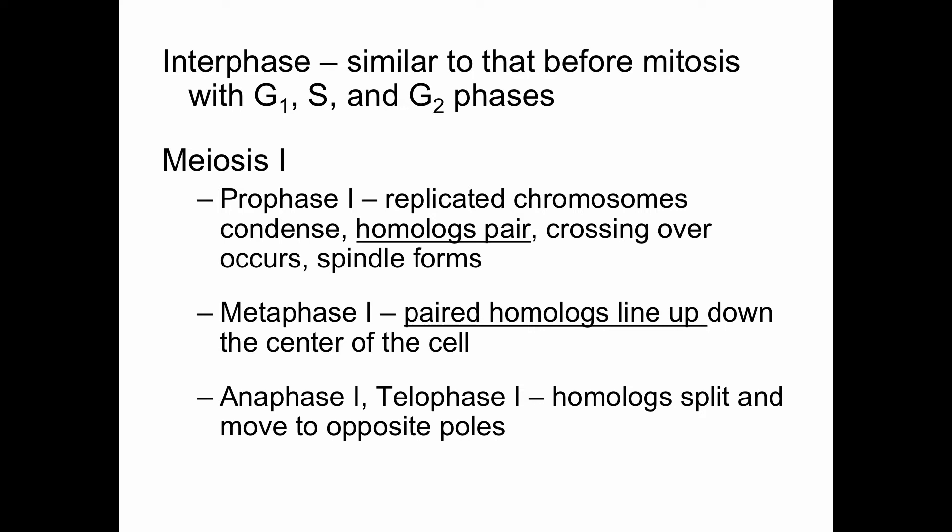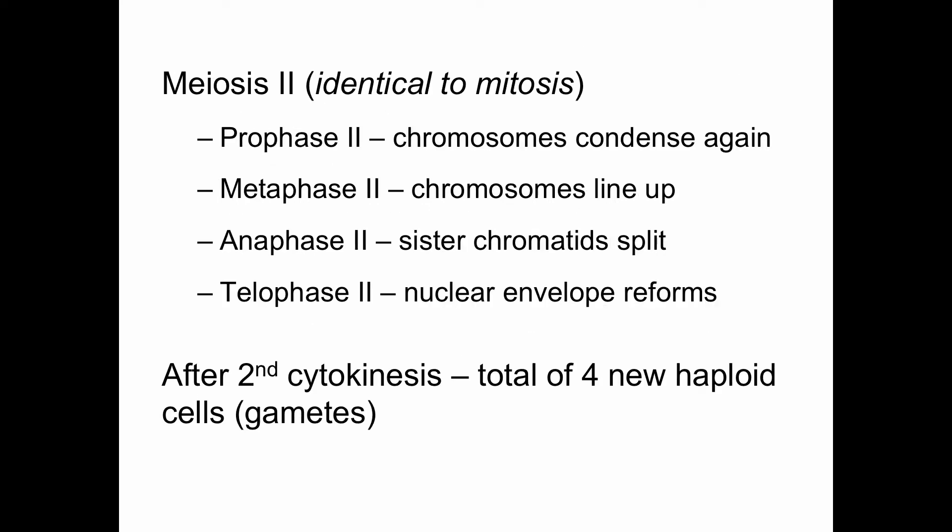In metaphase one, the paired homologs line up down the center of the cell — with their pair instead of single file. Then in anaphase, the pairs separate: one chromosome from the mother goes one direction, one from the father goes the other, but they stay joined at the centromere. Then in telophase, we split those cells essentially in half. Then we do this all over again with meiosis two.